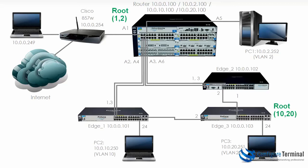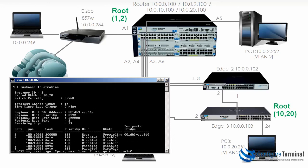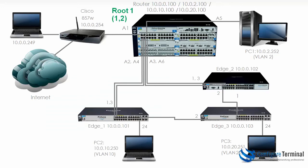There are separate topologies for each instance — we have created two instances, and don't forget there is still the IST instance. On edge 2for instance 1, TRK1 is the root port. For instance 2, port 2 is the root port. But looking at the IST, edge 2 is the root. So there are actually three roots in this topology: the router is root for instance 1 (VLANs 1 and 2), edge 3 is root for instance 2 (VLANs 10 and 20), and edge 2 is the root for the IST.